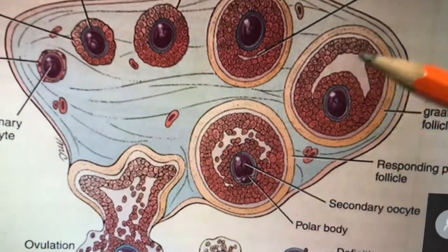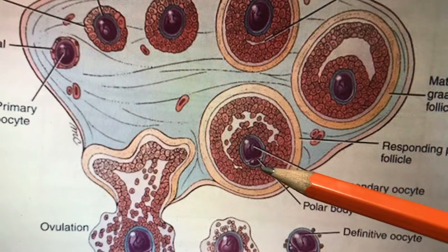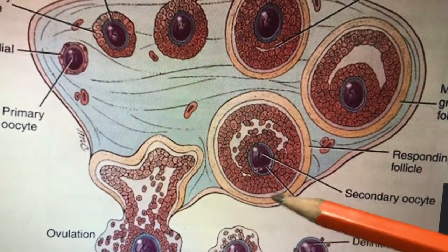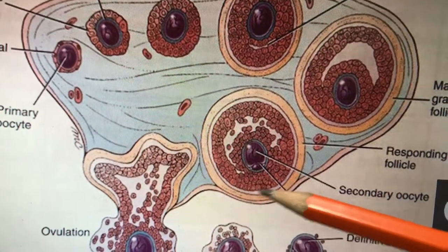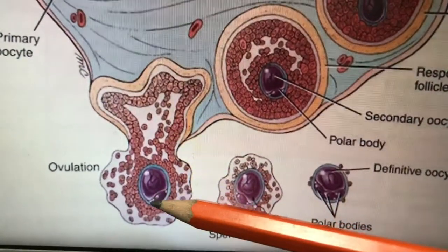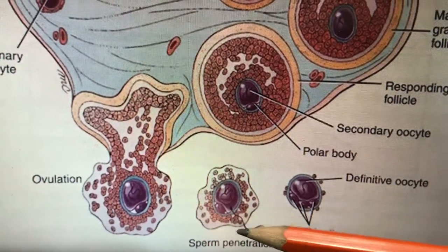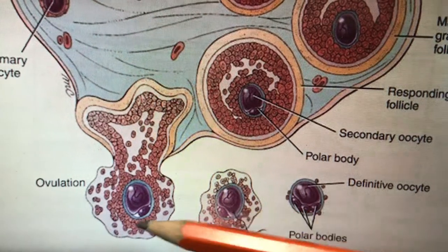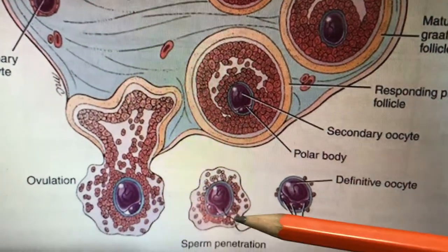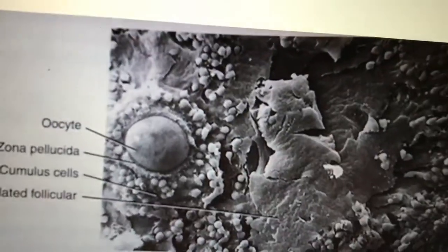The oocyte comes towards the edge, this area becomes necrosed and thinned out, and the oocyte is ruptured out — that is called ovulation. At ovulation, the sperm enters. The thin lining outside is called the zona pellucida, and this sperm penetrates the zona pellucida.